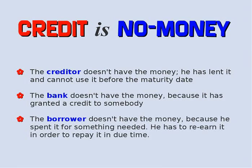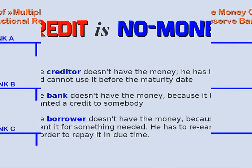In conclusion we can say: credit is not money. The creditor doesn't have the money — he has lent it and cannot use it before the maturity date. The bank doesn't have the money because it has granted a loan to somebody. The borrower doesn't have the money because he spent it for something needed. He has to re-earn it in order to repay it in due time.